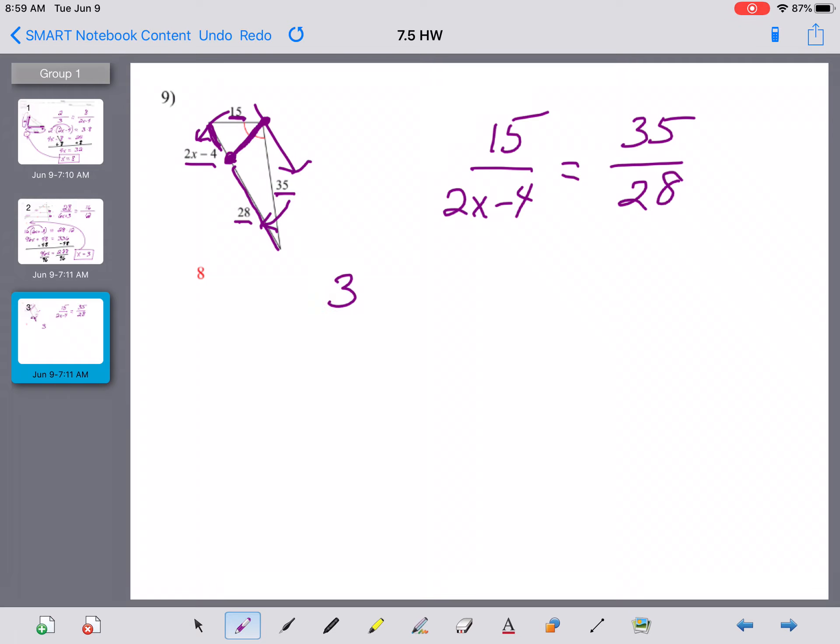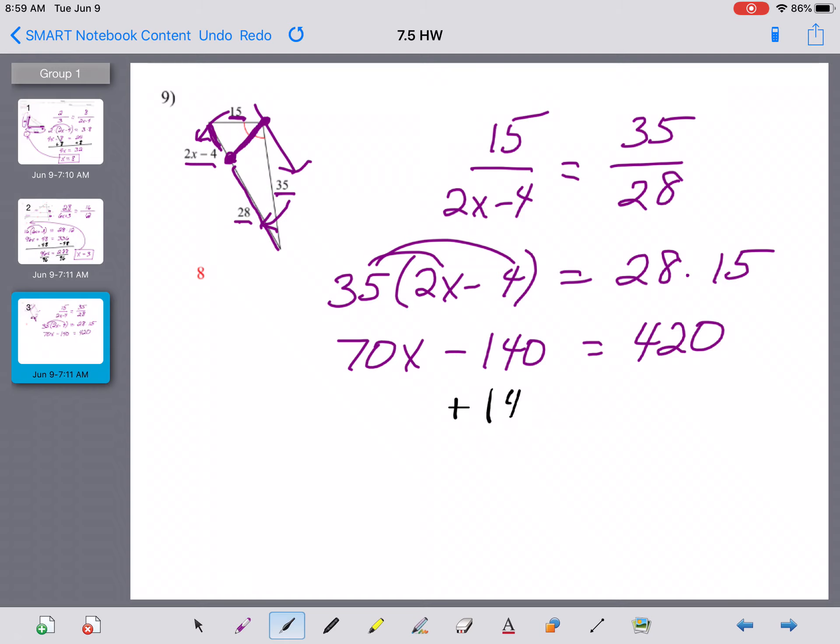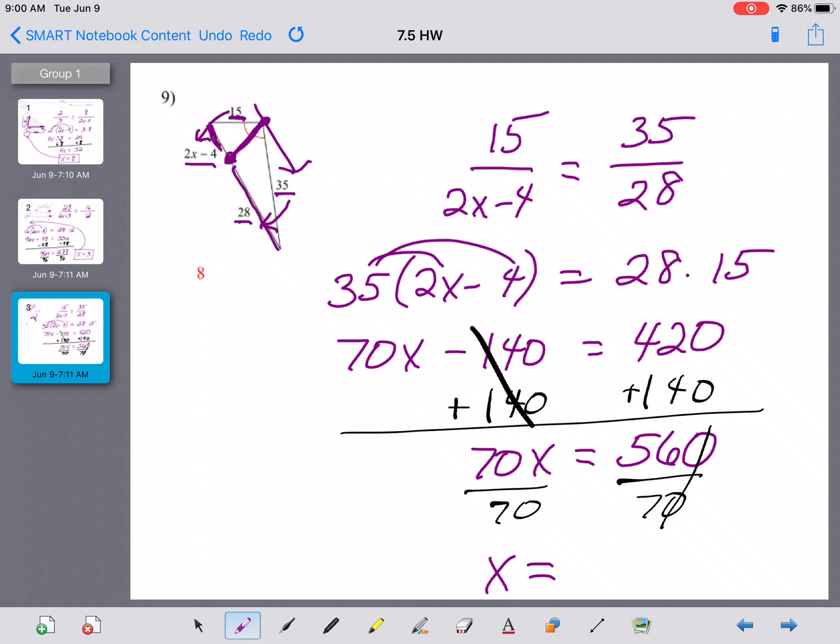I like to do the variable first. So this is going to be 35 times (2x minus 4), and that's going to equal 28 times 15. Let's distribute the 35. That'll get us 70x minus 140 equals 280 and another half of that 140 is going to be 420. We are going to add 140 onto both sides now. Those cancel out, and we are going to get 70x equals, that's now 560. Then we'll divide both sides by 70. Zeros cancel out. 56 divided by 7 tells us that x is just going to equal 8. Okay, and there's our correct answer for that one there.